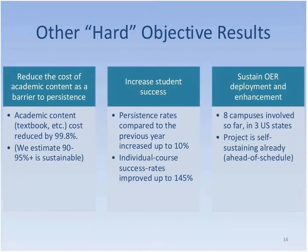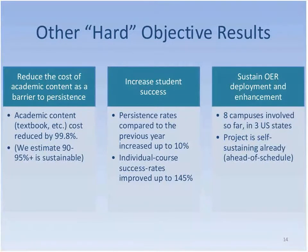The hardest result was cost savings. We were trying to reduce costs by at least 50% — we overachieved. Academic content cost for Kaleidoscope was reduced by 99.8%. Across 9,300 students, exactly two students bought exactly one book each. If you take somewhere between $500 and $1,100 per student per year as the average textbook bill, Kaleidoscope saves between half a million and $1 million for every 1,000 students enrolled. We estimate 90% to 95% of this cost savings is sustainable under the self-sustaining model, since large scale keeps per-student refreshment costs very low.